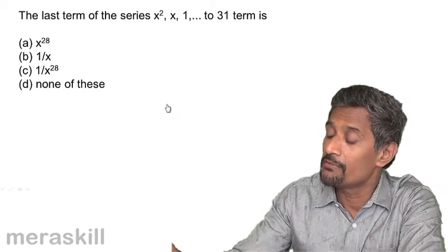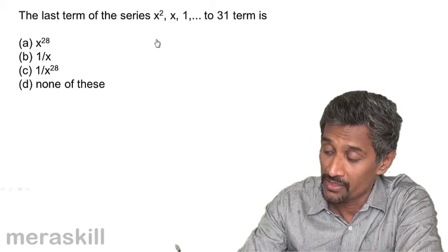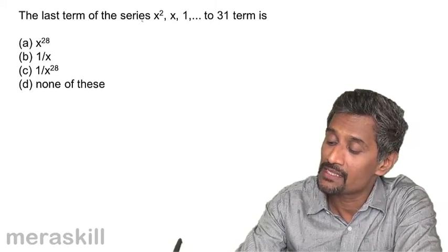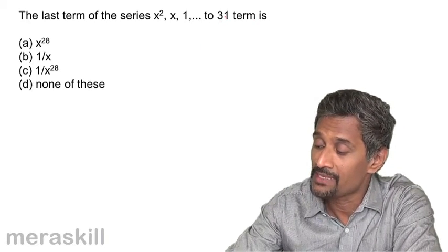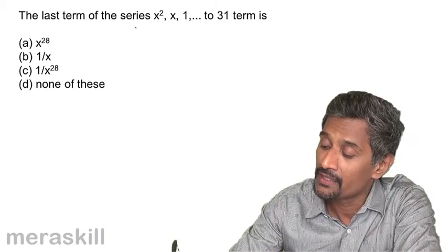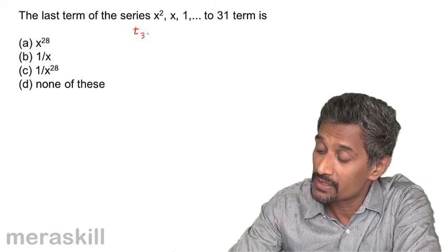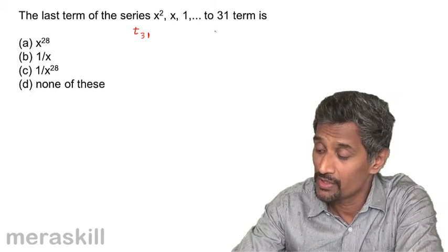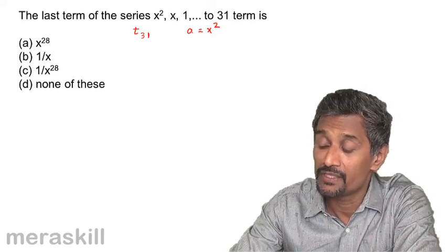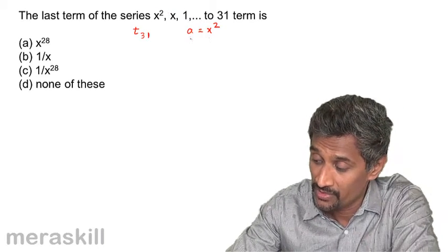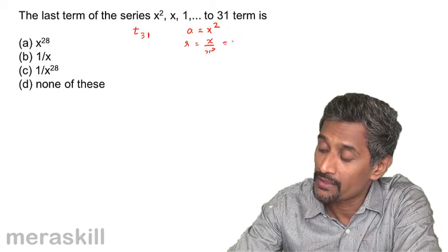We shall take up some concepts of finding the nth term of a geometric progression. Here we see the last term of the series with 231 terms, so we need to find t₃₁. Given that a is equal to x², this is definitely not an arithmetic progression, and r will be equal to x divided by x², that is 1 by x.